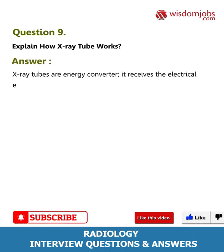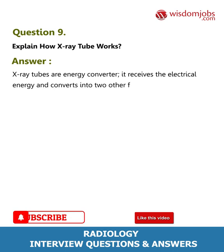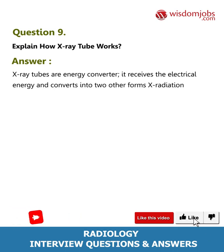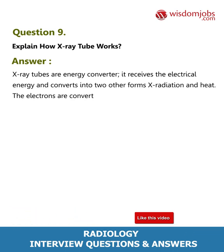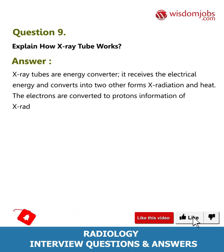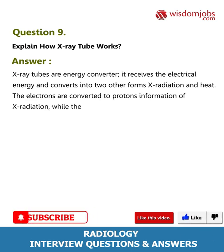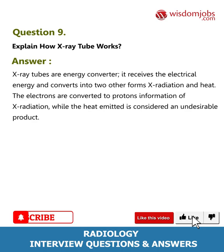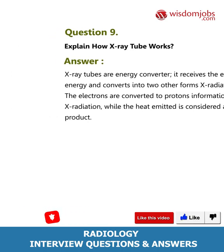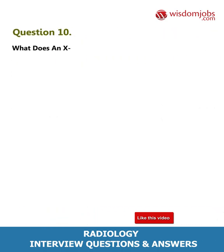Question 9: Explain how an x-ray tube works. Answer: X-ray tubes are energy converters. They receive electrical energy and convert it into two other forms: x-radiation and heat. The electrons are converted to produce x-radiation, while the heat emitted is considered an undesirable product.